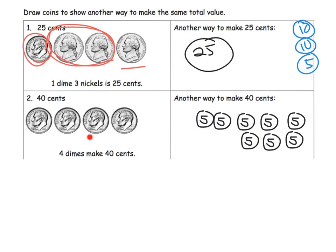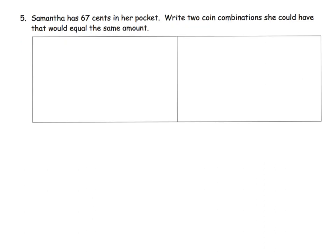Again, there's a variety of different answers. Just make sure your students have one of those correct answers. This is more my style. It says Samantha has 67 cents in her pocket, and we don't get to see it. Write two different coin combinations that would equal 67 cents.